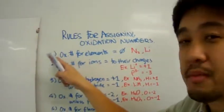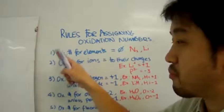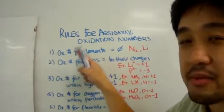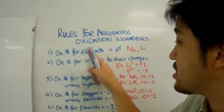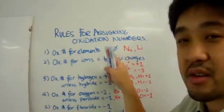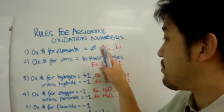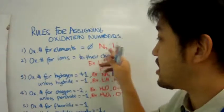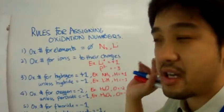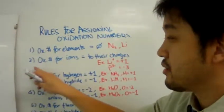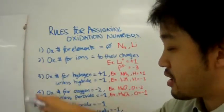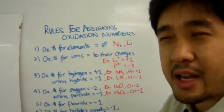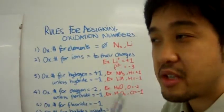Rule number one — the most premier of the rules: the oxidation number for elements is always zero. For example, nitrogen and lithium, the oxidation number for each is zero. All the other rules apply to molecules and compounds.